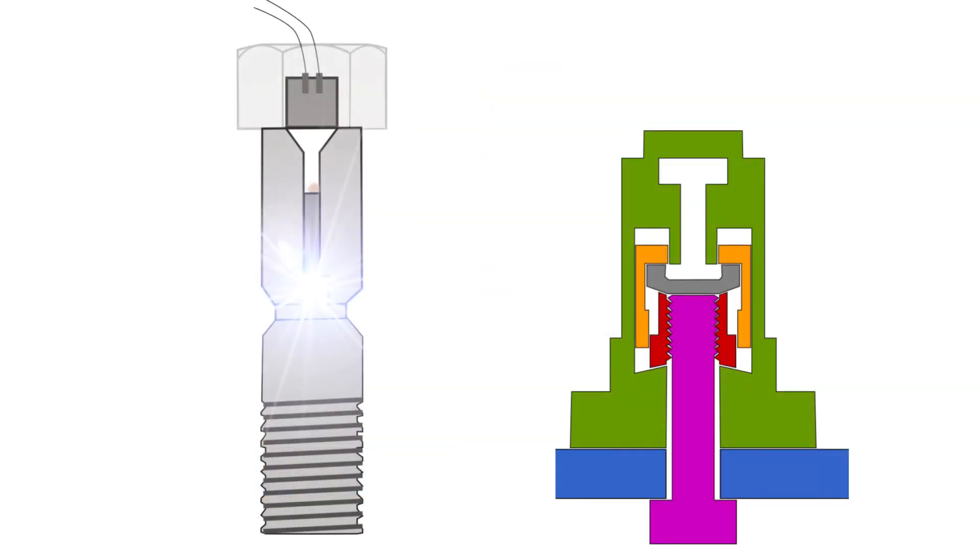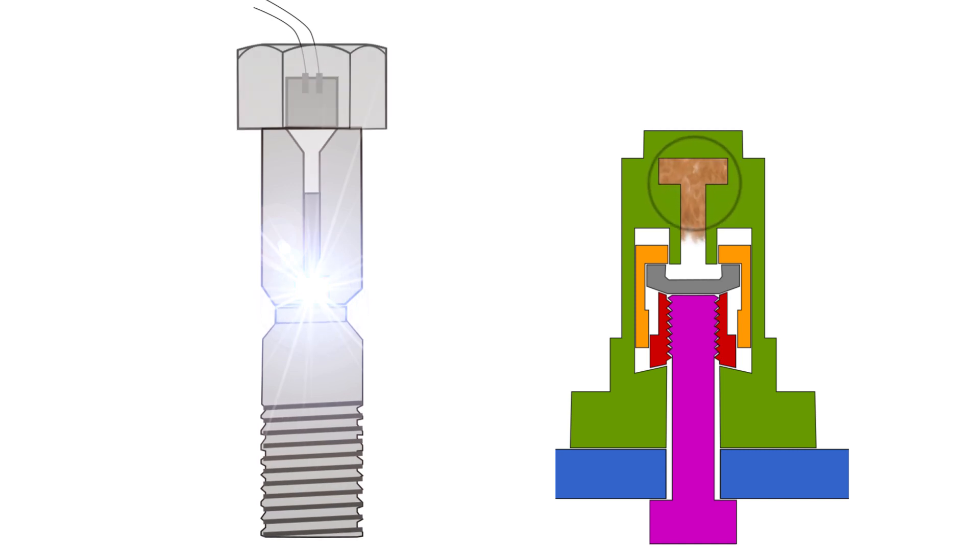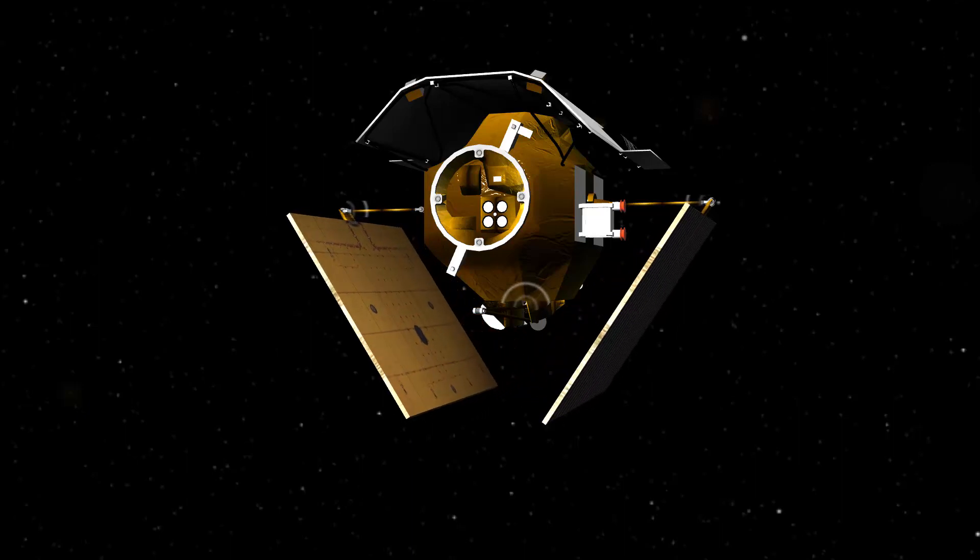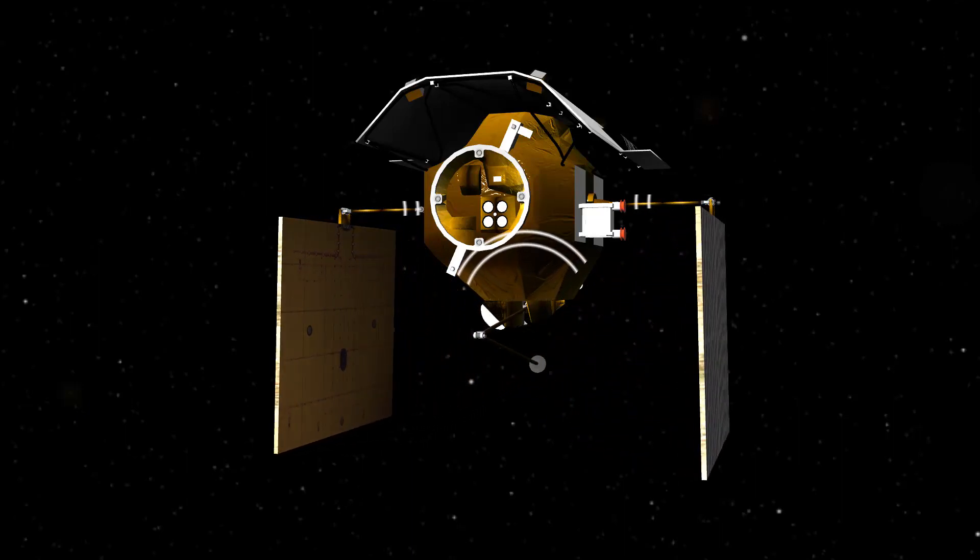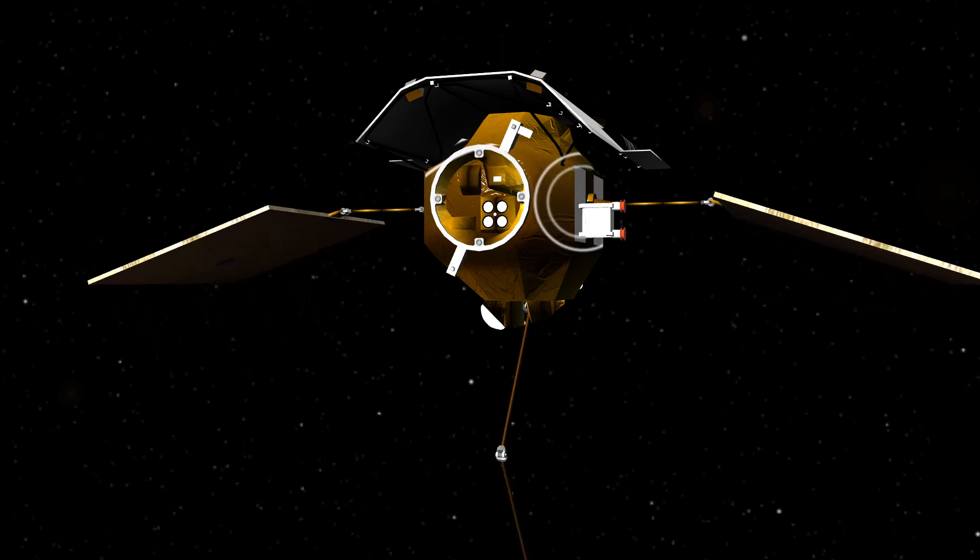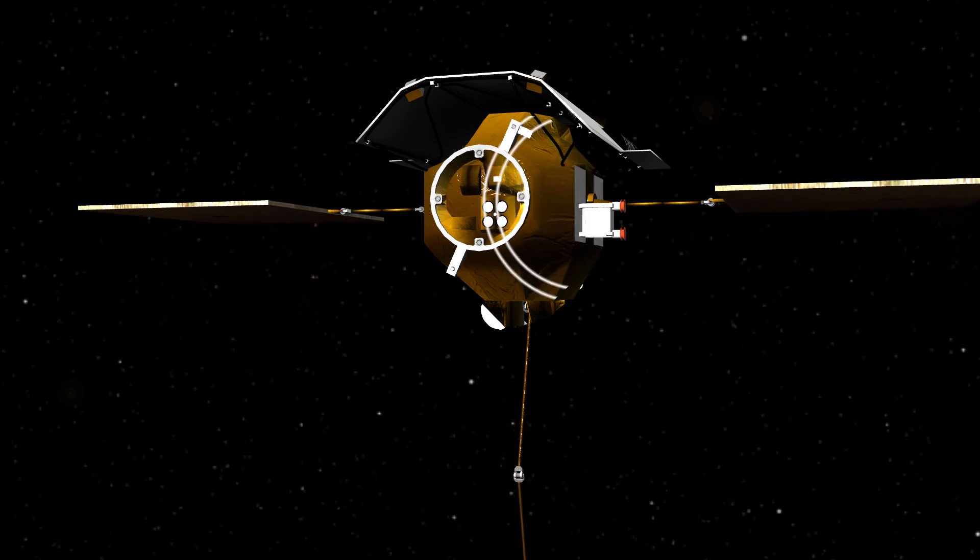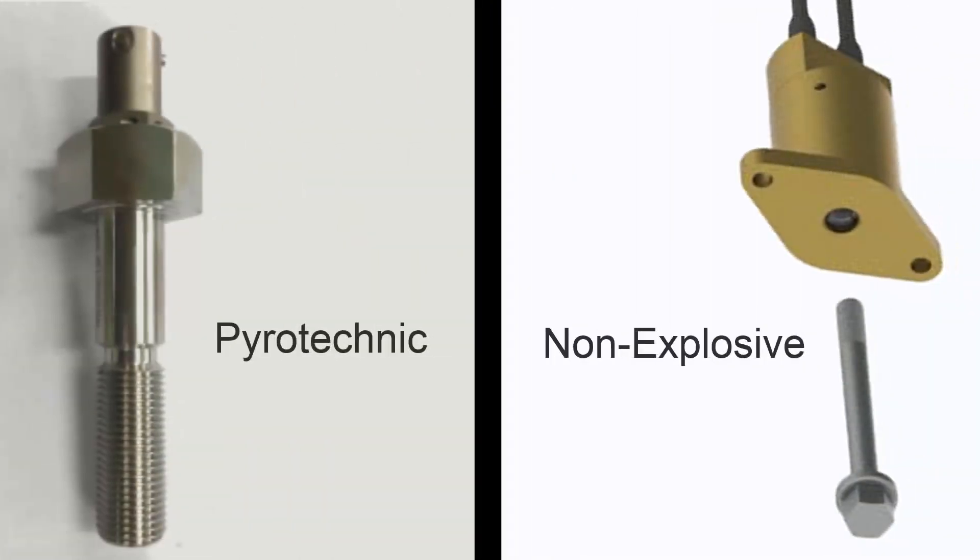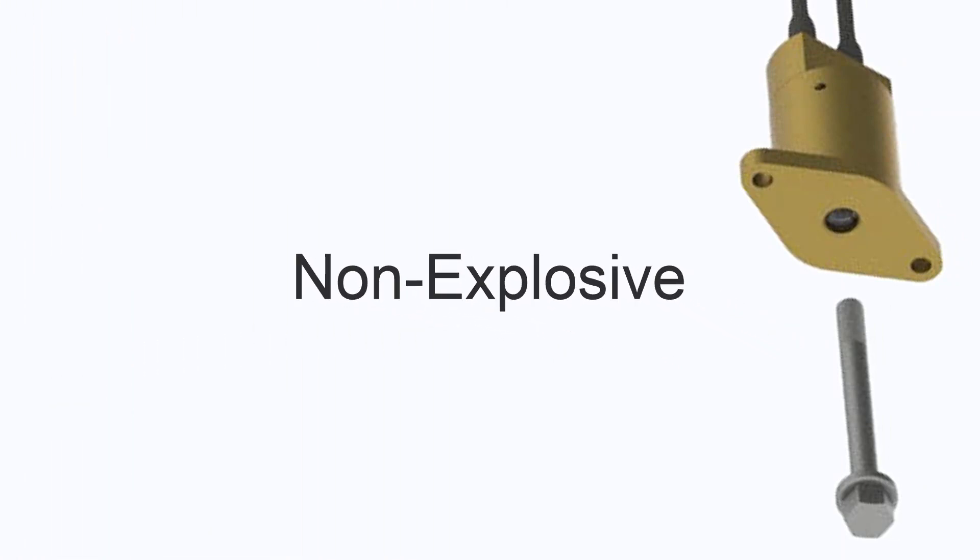Pyrotechnic HDRM suffers from one major issue. The detonation of explosives produce shock waves when they are triggered. This shock wave is transmitted throughout the spacecraft and can potentially damage electronic circuit boards, optical device alignments, and other sensitive components if it's not dealt with. Reducing these shock waves was one of the reasons for the development of our second type of HDRMs, non-explosive HDRMs.